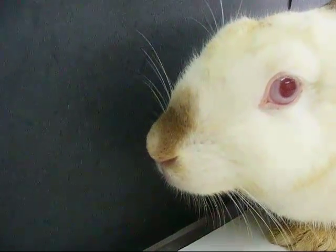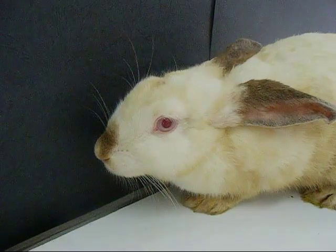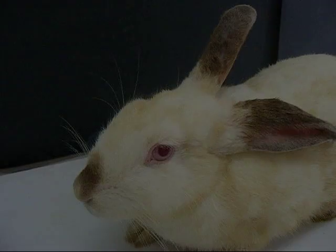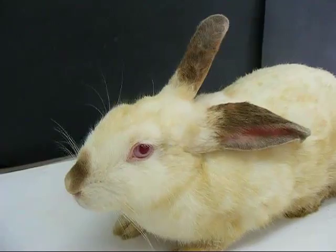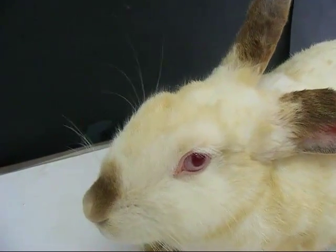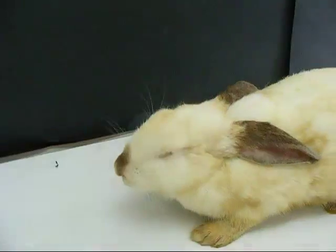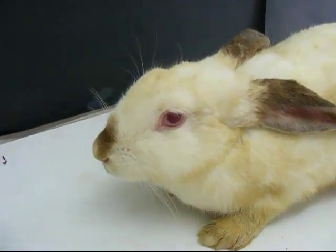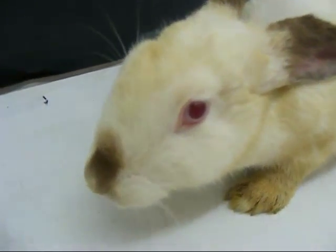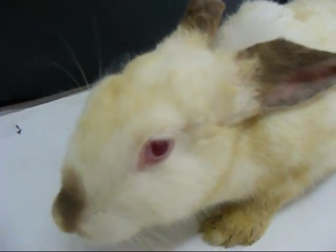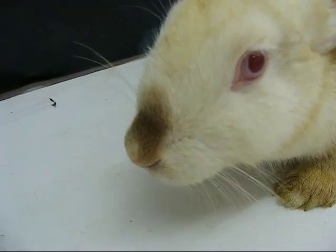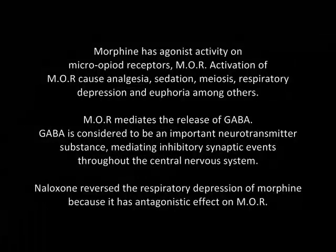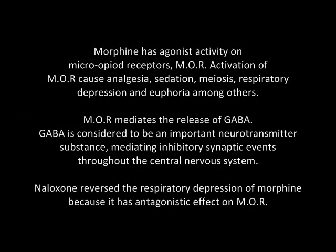Morphine has agonist activity on micro-opioid receptors (MOR). Activation of MOR causes analgesia, sedation, miosis, respiratory depression, and euphoria, among others. MOR mediates the release of GABA, which is considered to be an important neurotransmitter substance mediating inhibitory synaptic events throughout the central nervous system. Naloxone reverts the effect of morphine because it has an antagonistic effect on MOR.